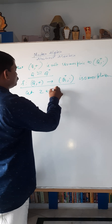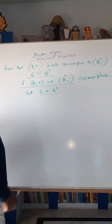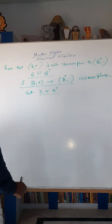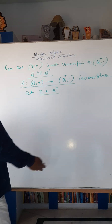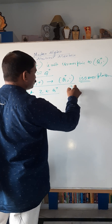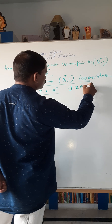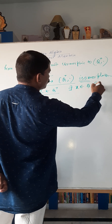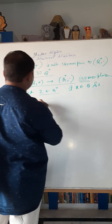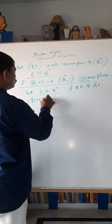Since 2 belongs to Q⁺ — 2 is a positive rational number — there exists an x belonging to Q such that f(x) equals 2.